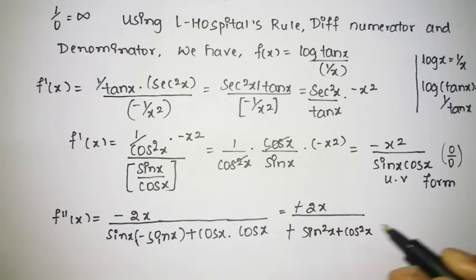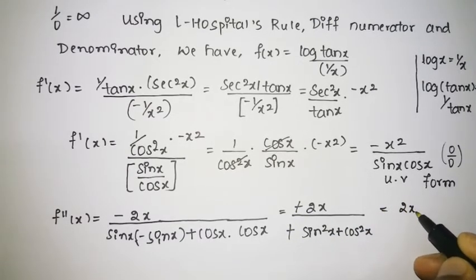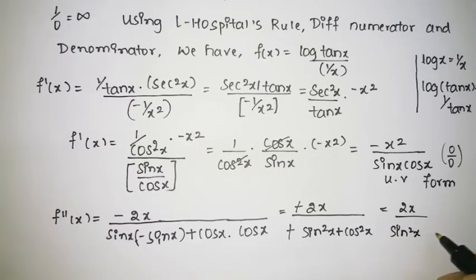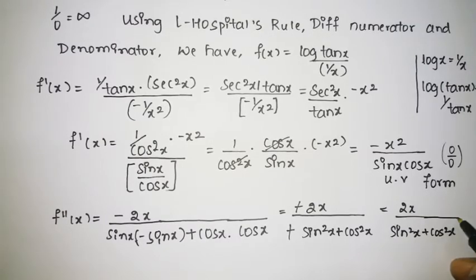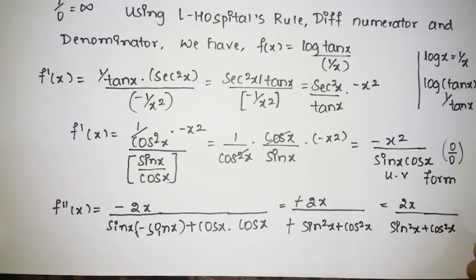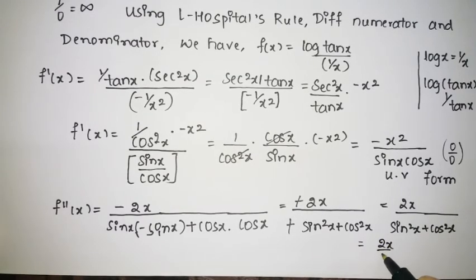The two negatives cancel, so we have 2x divided by sin²x plus cos²x. As we know, sin²x plus cos²x equals 1, so we write this as 2x divided by 1.